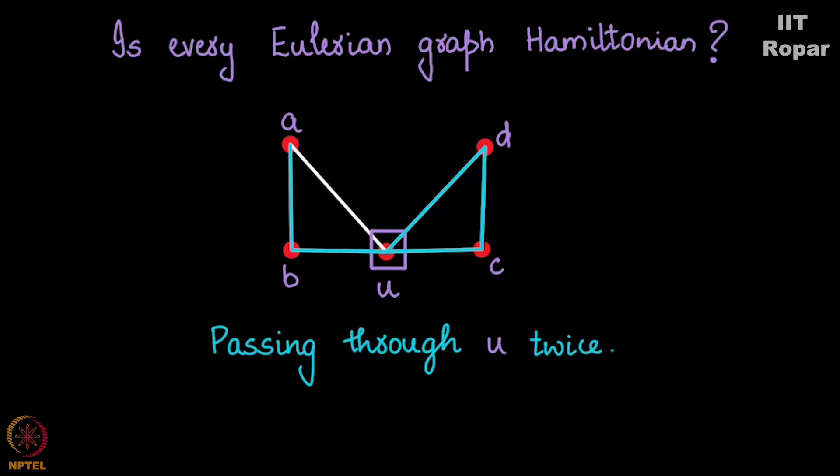Though the graph is Eulerian because the degree of every vertex is even, it is not Hamiltonian. So here is a graph which is Eulerian but it is not Hamiltonian.